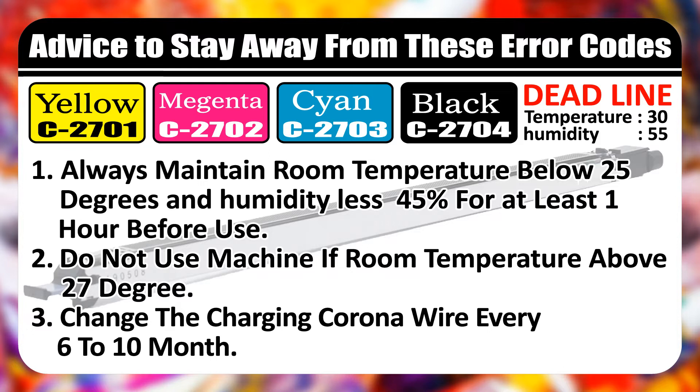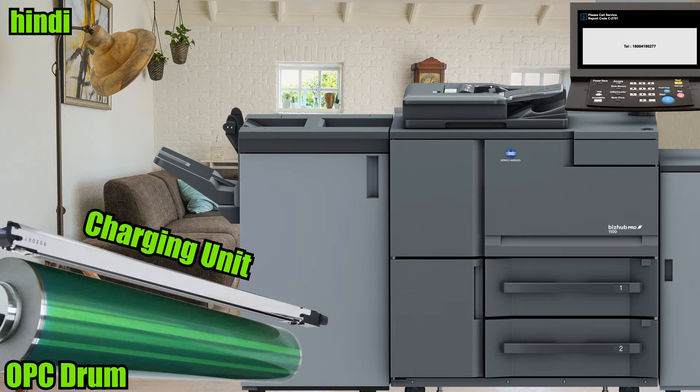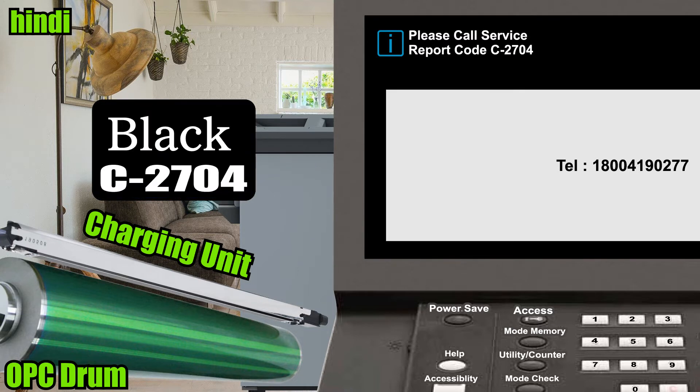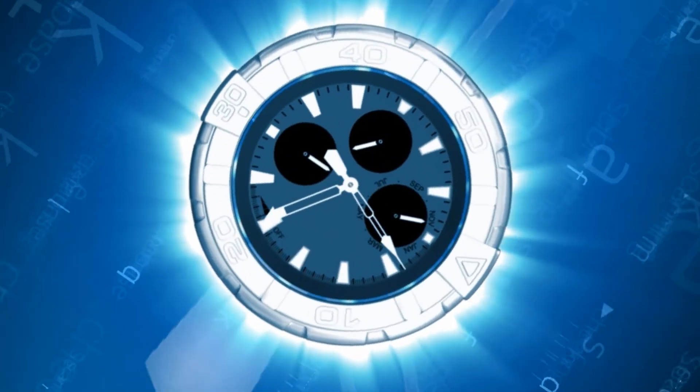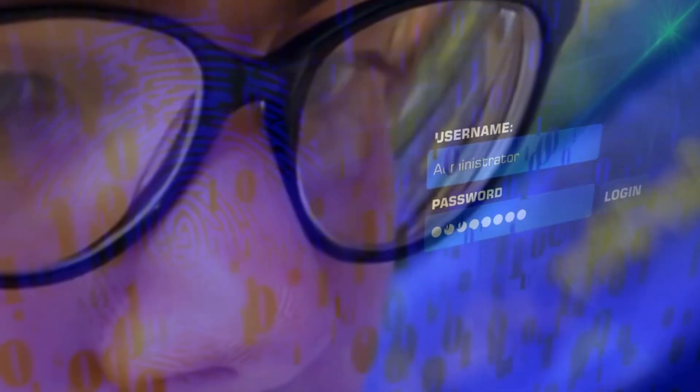Hello friends, Hindi video mein aapka swagat. Is video mein hum OPC drum discharging abnormality error code ke baare mein baat kar rahe hain jo ki 2701, 2702, 2703, aur 2704 hain. Kuch minutes mein hum seekh rahe hain ki humein yeh error code kaise milta hai, hum is error code ko kaise theek kar sakte hain, aur hum hamesha is error code se kaise bach sakte hain.